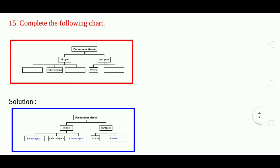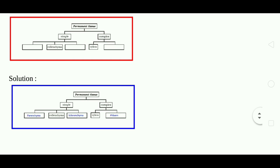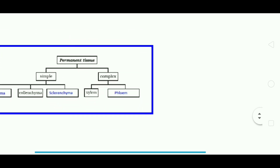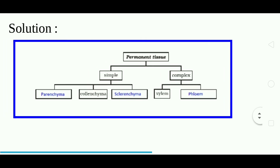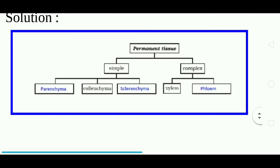Question 15: Complete the following chart. Permanent tissue is divided into two types — simple and complex. Simple tissue is divided into three types: parenchyma, collenchyma, and sclerenchyma. Complex tissue is divided into two types: xylem and phloem.